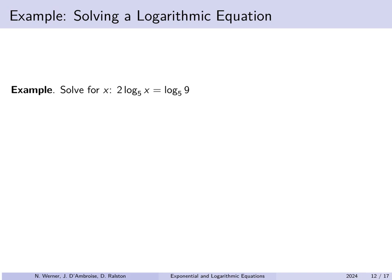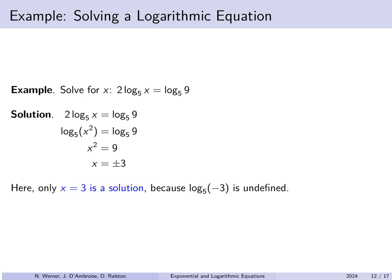Solve for x: 2·log₅(x) = log₅(9). We try to get one logarithm equal to another. Bringing the factor of 2 inside gives log₅(x²) = log₅(9). Since logarithms are one-to-one, x² = 9, so x = ±3. But only x = 3 is a solution — for x = -3, you cannot take the logarithm of a negative number. The identity 2·log₅(x) = log₅(x²) only holds when x is in the domain, i.e., positive.